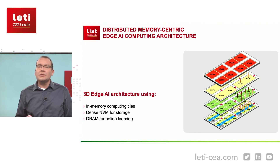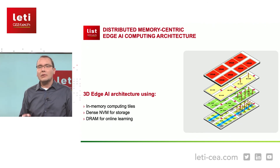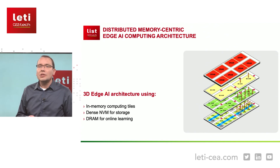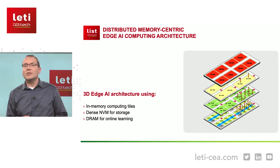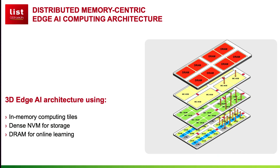So what we envision is a multiple-tier parallel architecture composed of: a layer of generic processing engines for handling exotic neural network layers; a layer of in-memory computing for energy-efficient operations; a layer of non-volatile memory for storing the weights; and finally, if needed, a layer of DRAM memory for storing a large number of activations and thus enabling online learning.